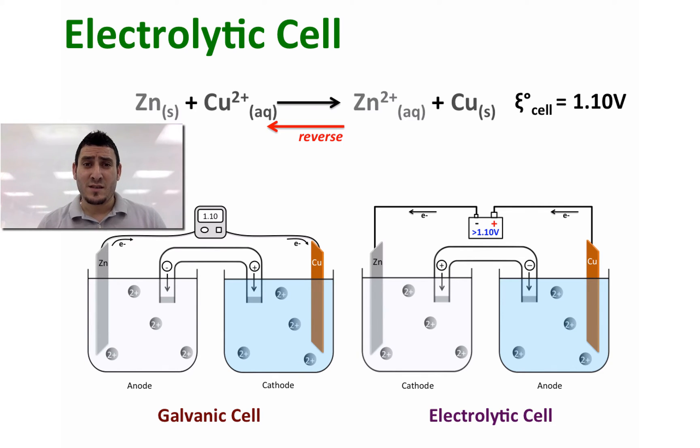The power source with a voltage greater than 1.10 will force the electrons to flow in the opposite direction. Notice that since the flow of electrons is opposite in the two cells, the anode and the cathode are reversed as well. Also, the flow of ions in the salt bridge will be reversed as well.